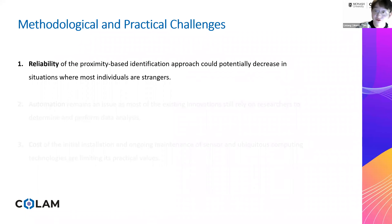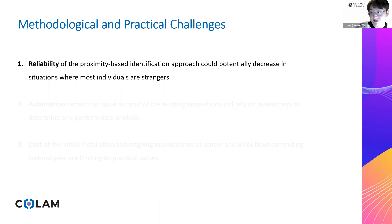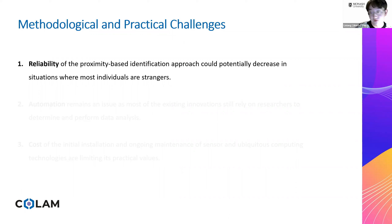However, for social spatial analytics to achieve its full potential, some methodological and practical challenges need to be addressed. Proximity-based identification is at most an estimation of whether an interaction has occurred, which depends on the level of familiarity between individuals. The reliability of such estimation could potentially decrease in situations where most individuals are strangers, such as newly formed classes, resulting in false identification of non-reciprocal and unintended interactions from close proximity as meaningful encounters.